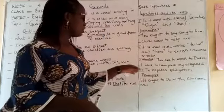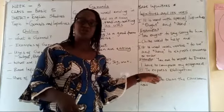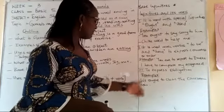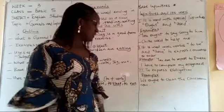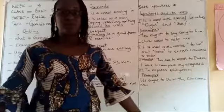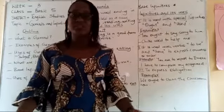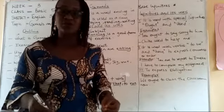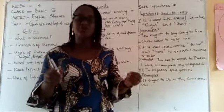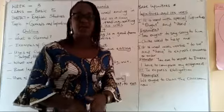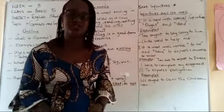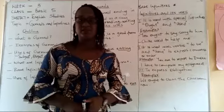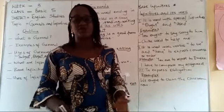We can also use infinitives to express obligation — things you are expected to do. 'We have to play in the classroom now.' These are obligations. 'You have to be a good child. You have to be obedient to mommy and daddy. You have to be obedient to your teacher. You have to study.' Obligations are what you are expected to do.